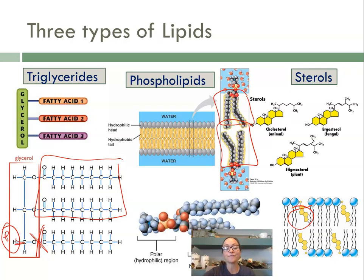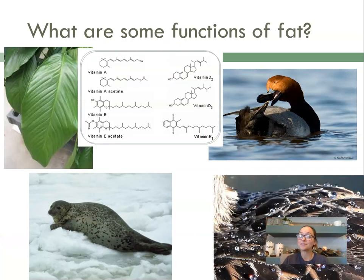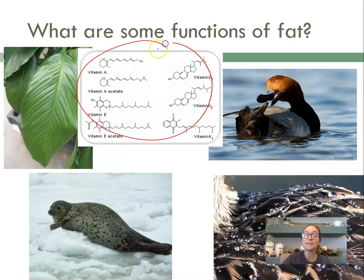What are some functions of fats or lipids? You have some vitamins like I just mentioned. Plants have this waxy cuticle on their surface that makes it kind of waterproof. It can be used for insulation, so mammals who live in cold temperatures will have a lot of lipids or triglycerides stored as blubber to keep them warm.